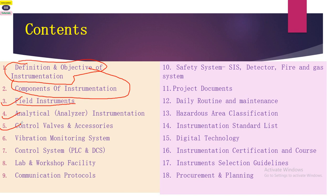The sixth point is vibration monitoring systems in the instrumentation field. If you are working in this field, vibration is very important. The vibration monitoring system includes speed measurement and various systems, and we will briefly discuss how it all works.